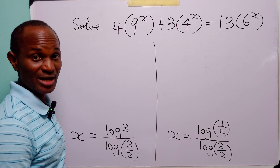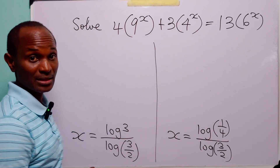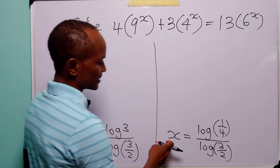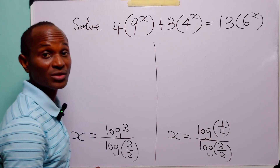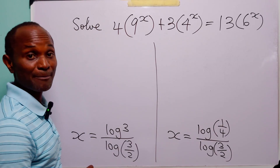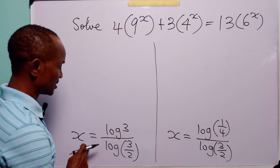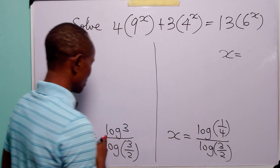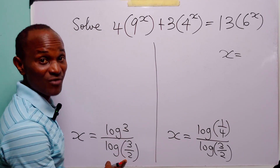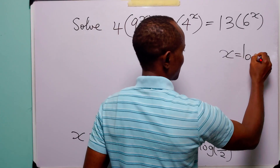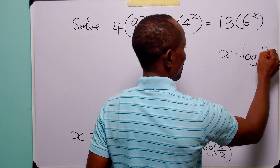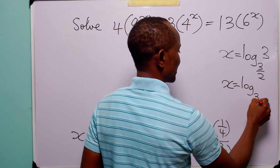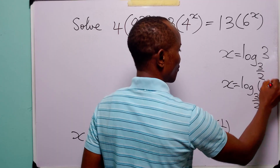So we have calculated two values of x that satisfy the given exponential equation: x equals log 3 divided by log(3/2), and x equals log(1/4) divided by log(3/2). Applying the change of base formula, we can write these as x equals log base (3/2) of 3, and x equals log base (3/2) of (1/4).